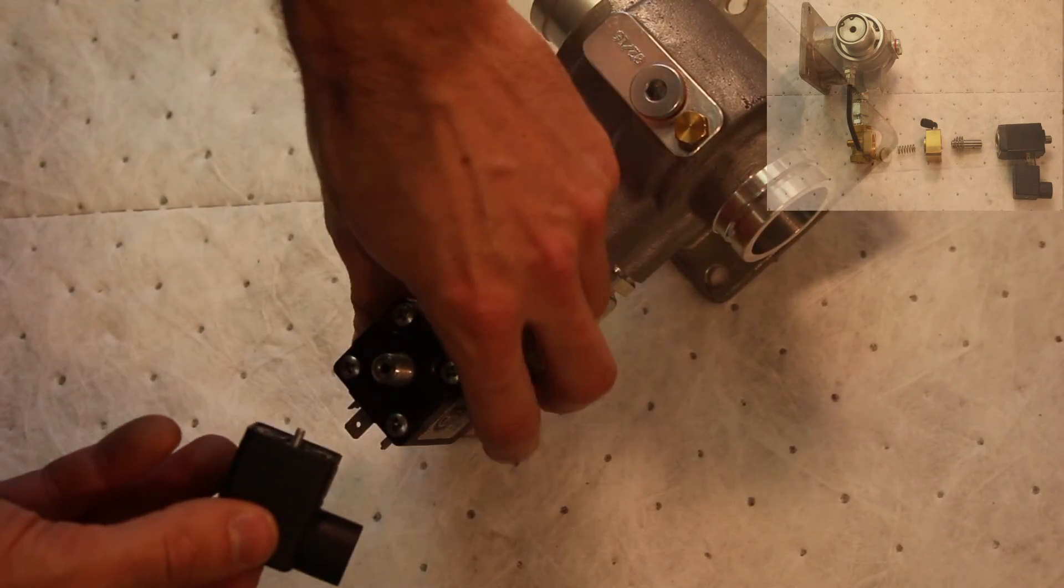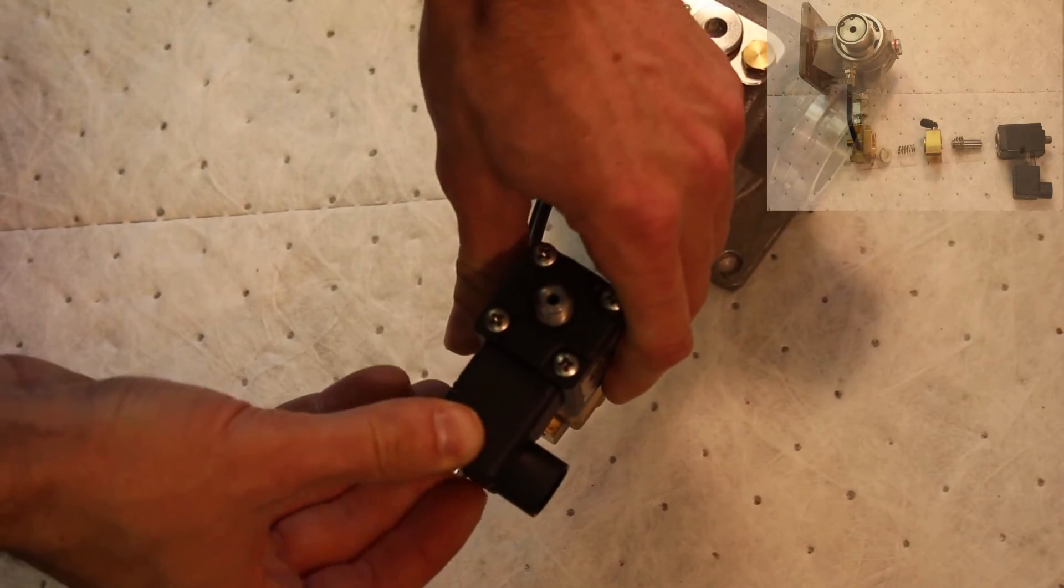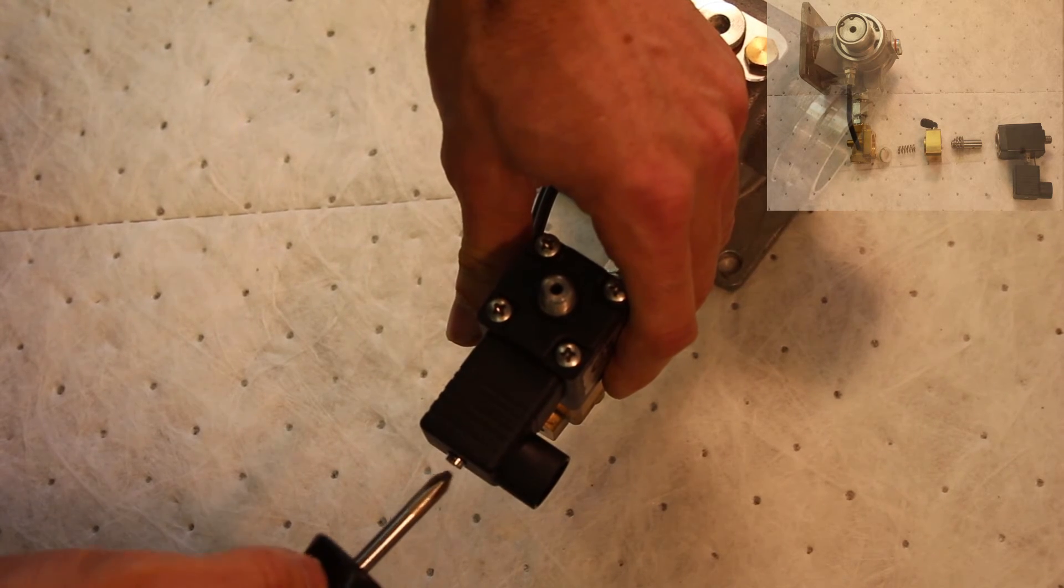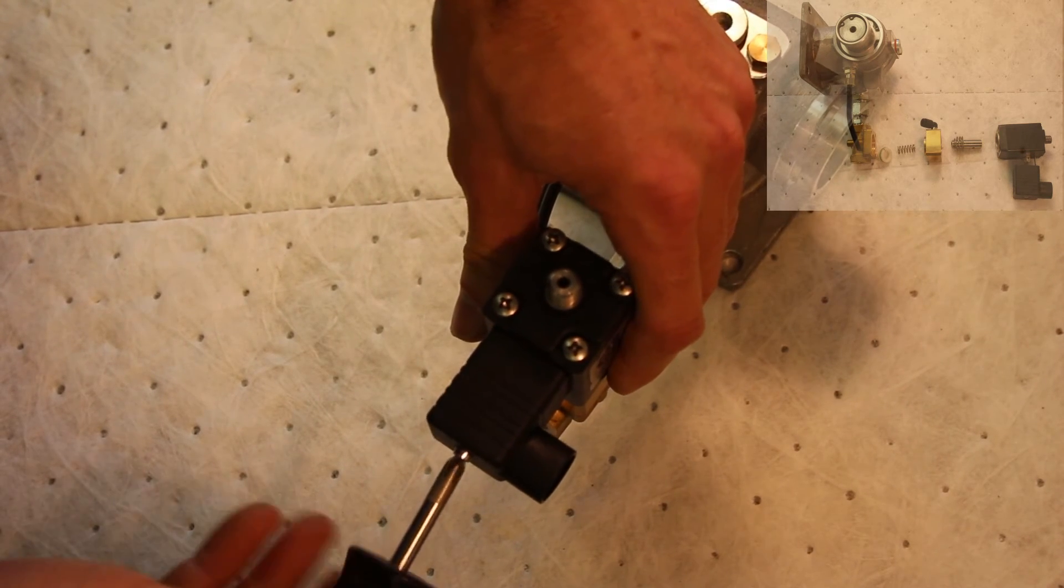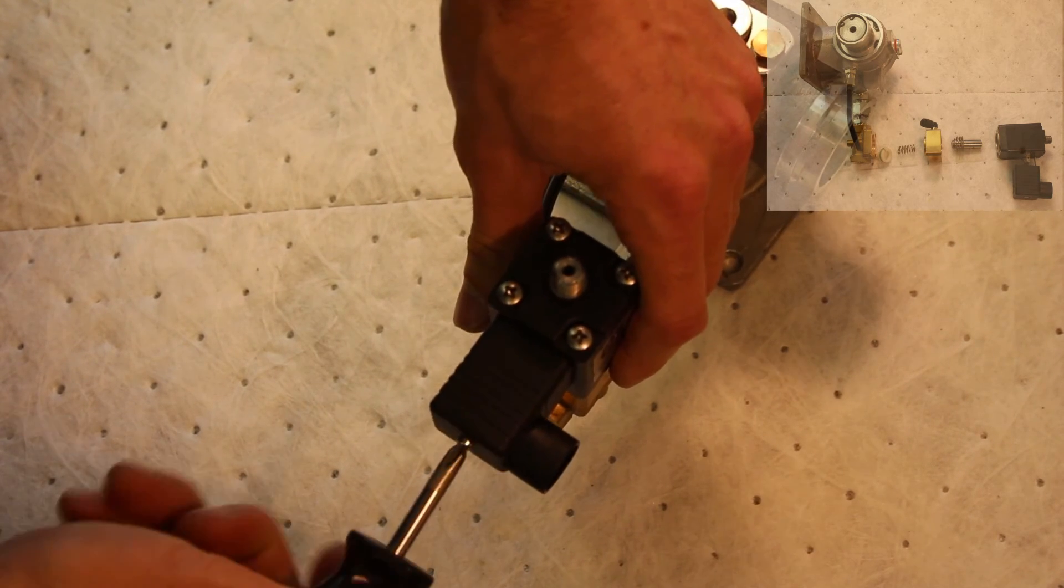Finally, reinstall the cord cap onto the solenoid valve and tighten the single retaining bolt. Use light tension on this bolt as it is easy to strip the threads from the solenoid valve body.